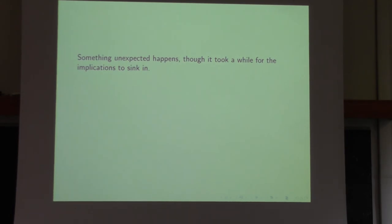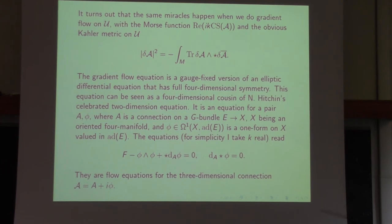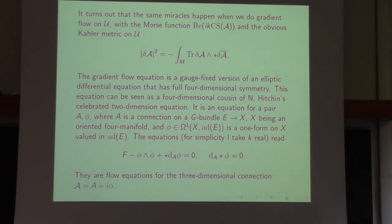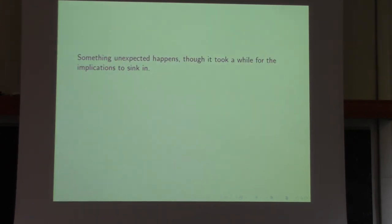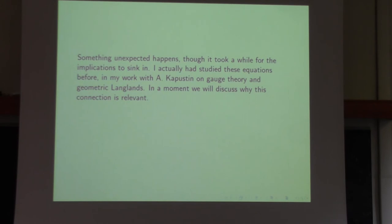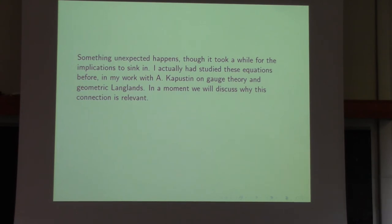A couple of unexpected things happened: the equations are natural equations with four-dimensional symmetry. Moreover, the equations we get are actually equations that Kapustin and I had studied in a related gauge theory context for geometric Langlands. That turns out to be important for a reason I'll get to in a moment. These equations have also been studied more recently by Taubes and by Witten.